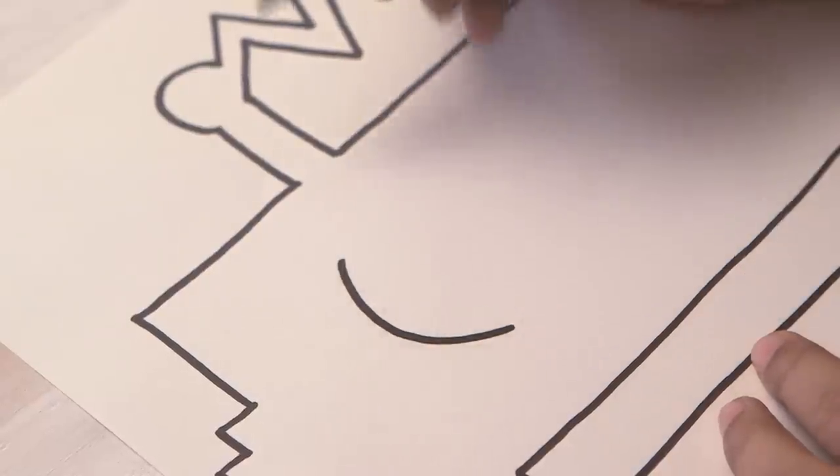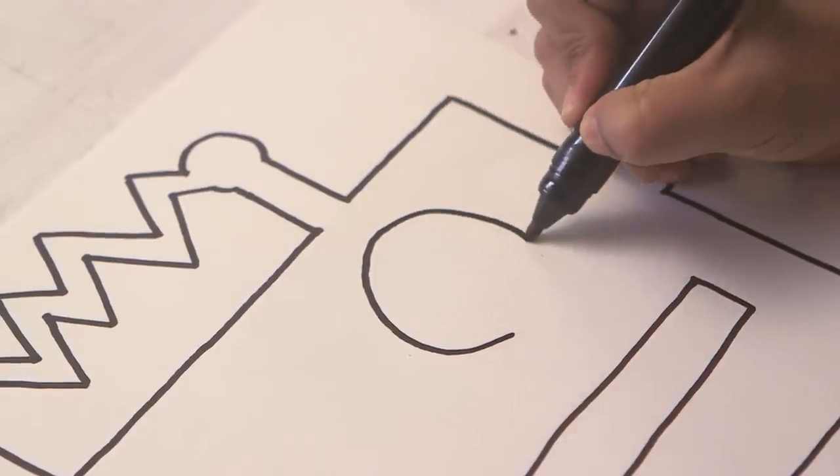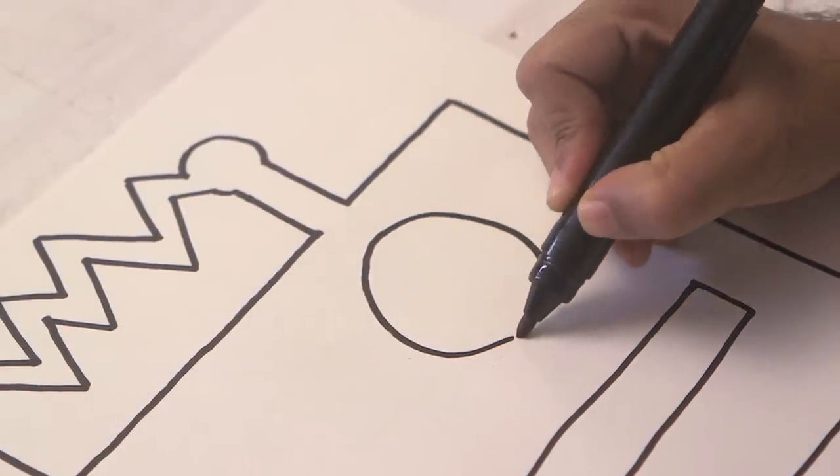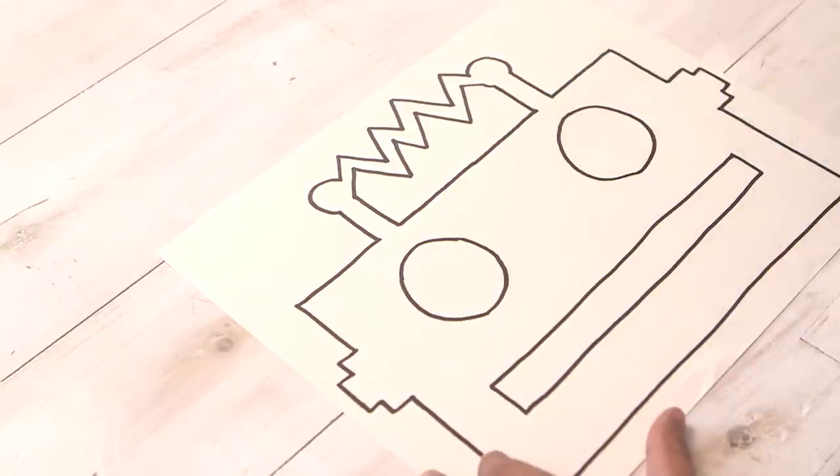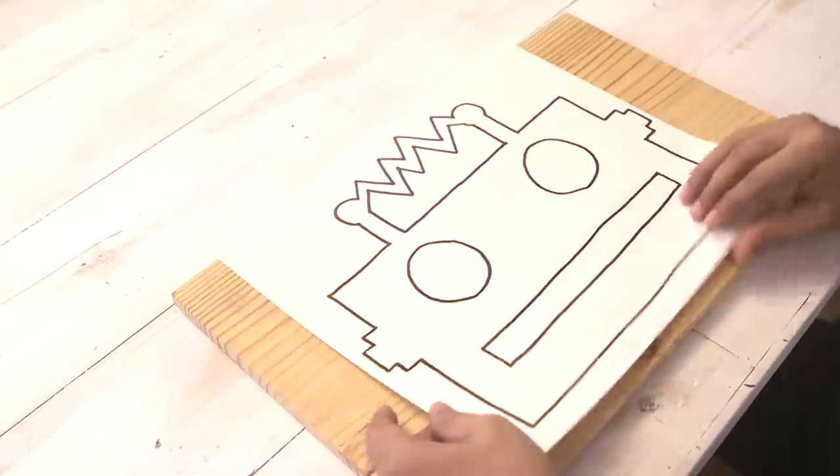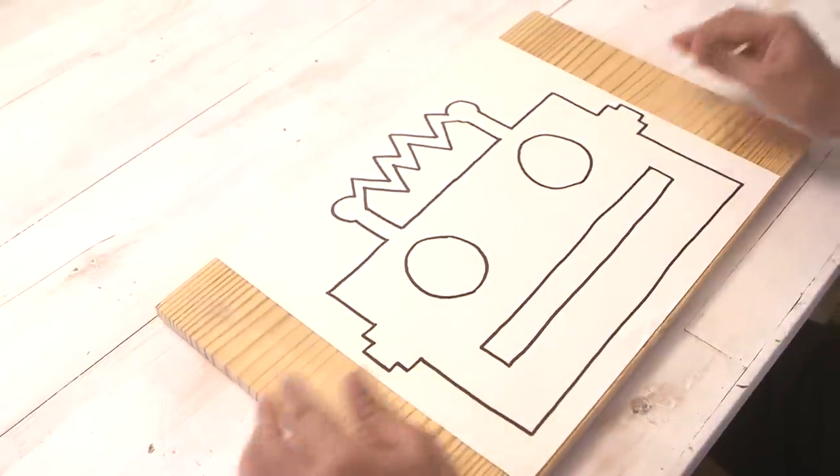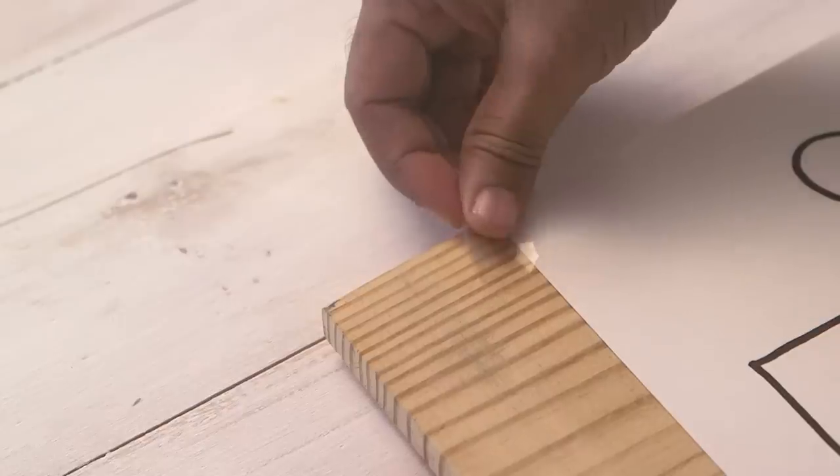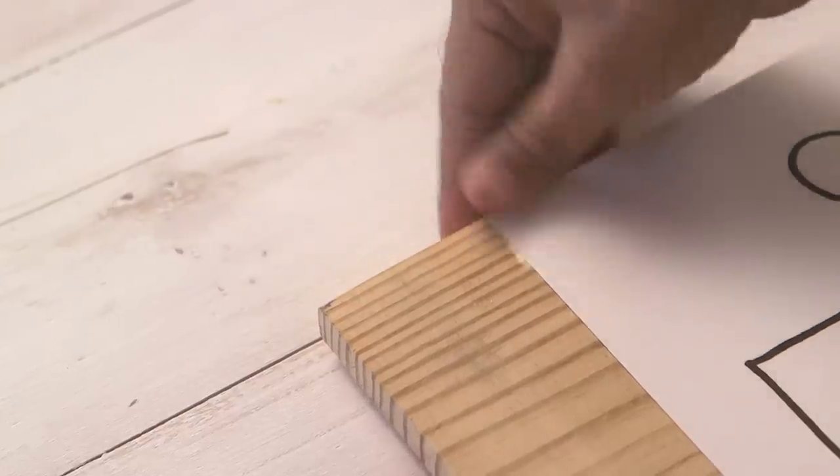Now when you're drawing make sure you have a simple image because you'll have to put nails. So here I have nice clean lines. Now the second step is we need a wooden board. Now we'll place our sketch on this. Then with the help of tape just stick it in place.